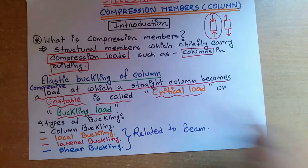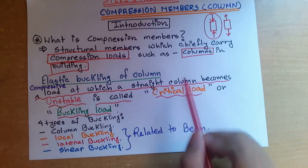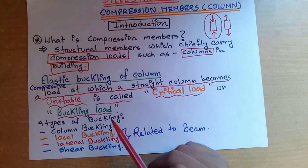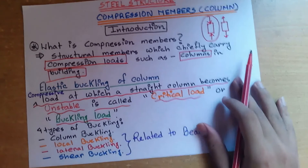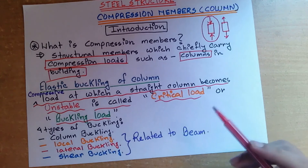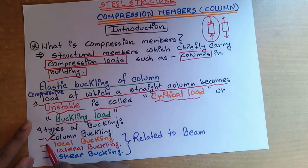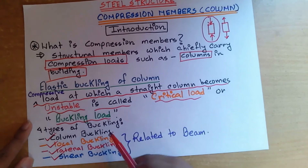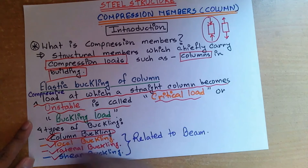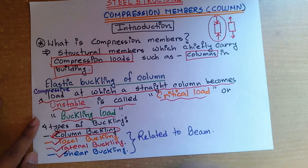In summary, elastic buckling of a column will take place if the critical load or buckling load is imposed on the column. Now there are four types of buckling that take place in our structure: number one is column buckling, number two is local buckling, number three is lateral buckling, and number four is shear buckling. In this chapter we will discuss only column buckling.